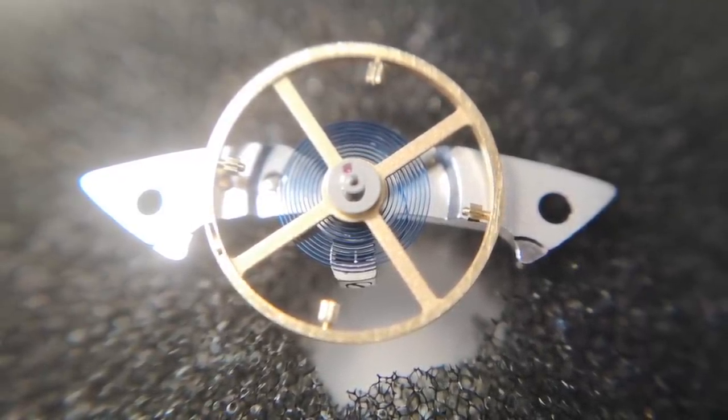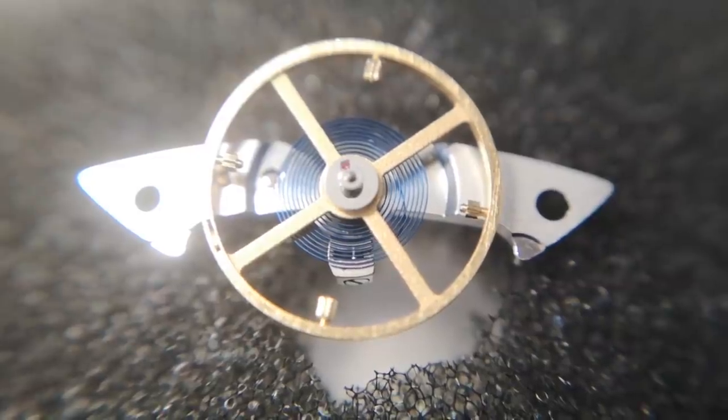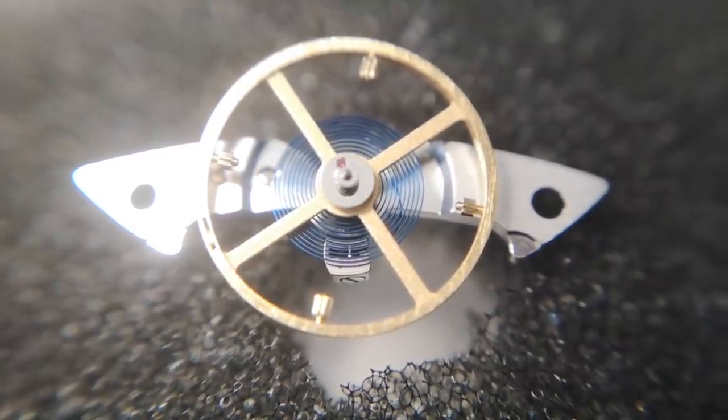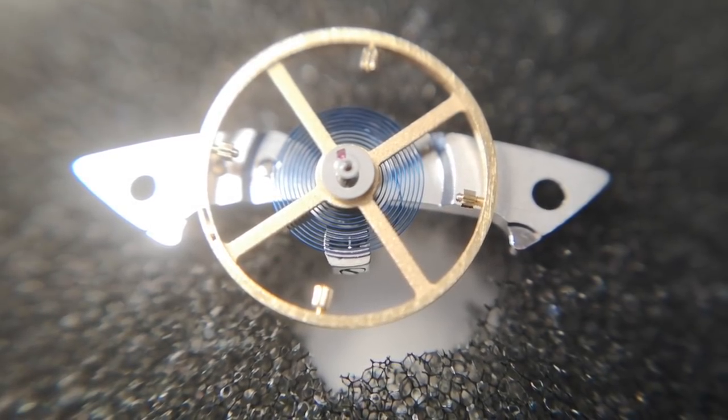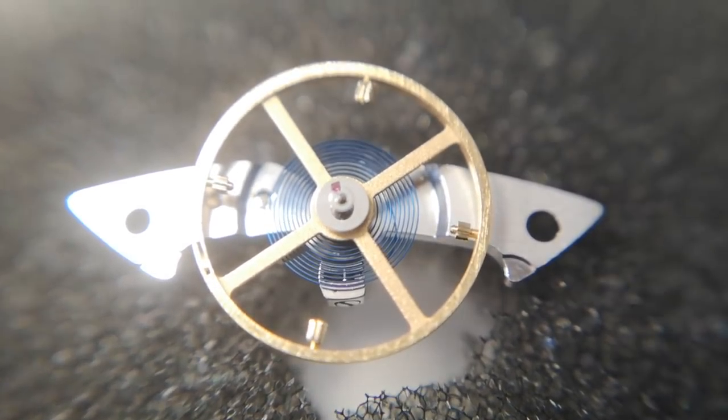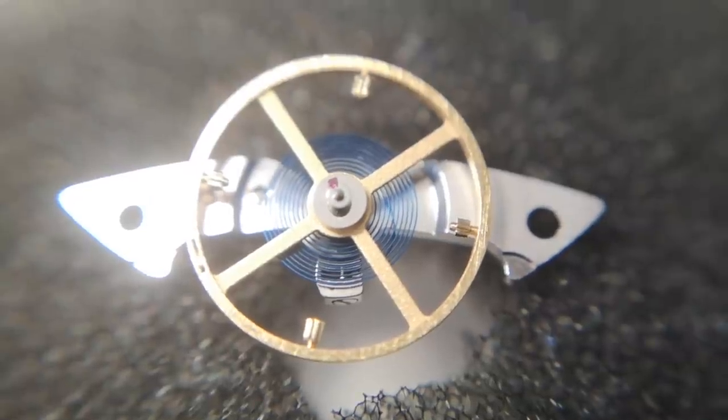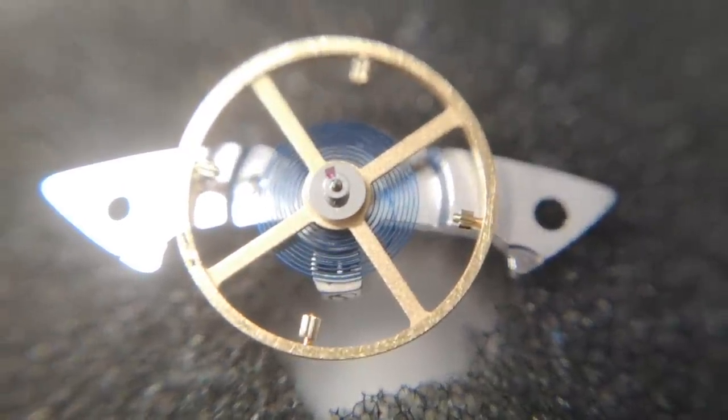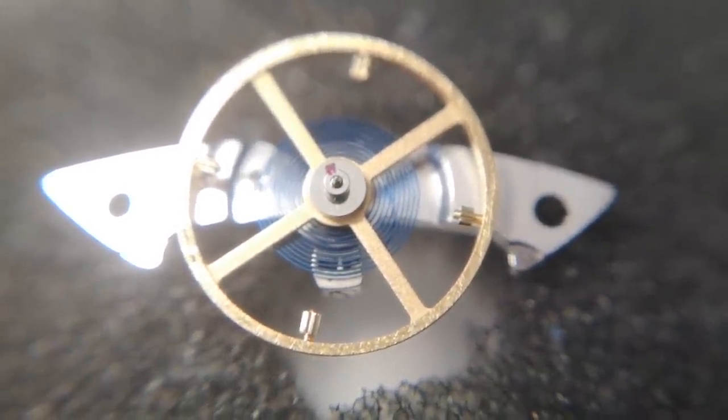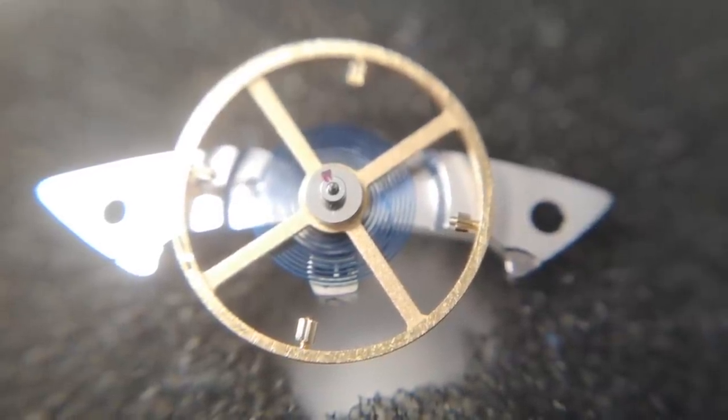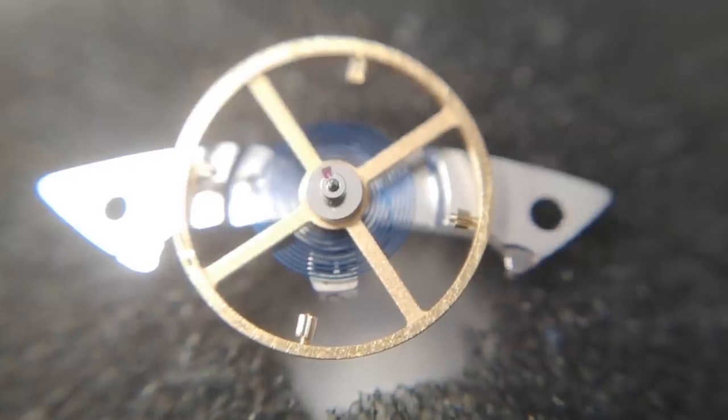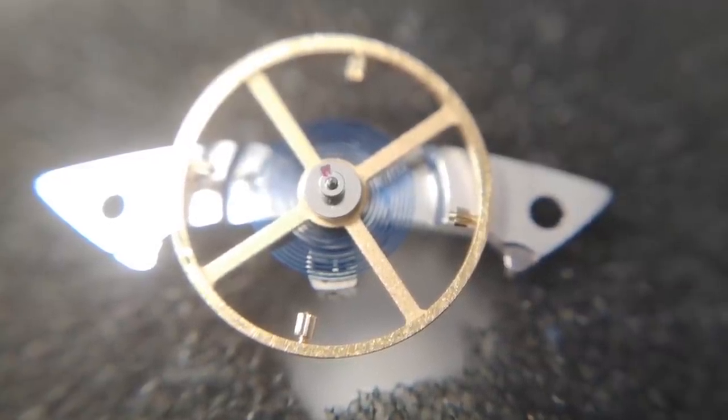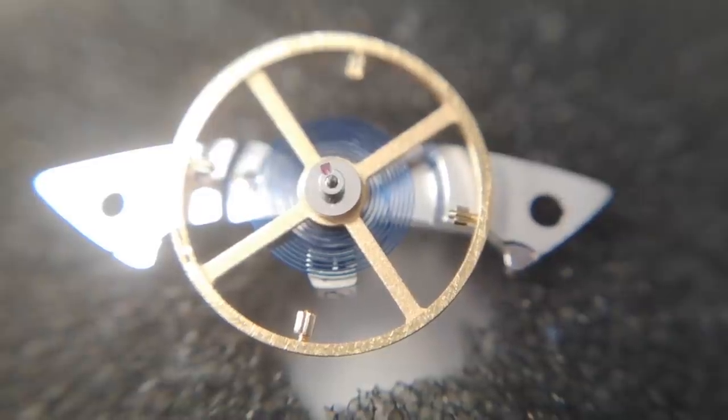Here then is the balance wheel that you can see, which is a free sprung balance wheel with the Parachrom hairspring that you can see there - nice blue hairspring. And you can see very clearly the four balance screws there, and using a special tool we move those screws either towards the center or out towards the rim of the balance.